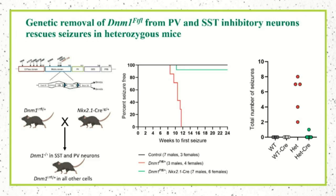We also asked whether removing the variant from specific neuron populations can improve the seizure phenotype. The mice have LOXP sites around the exon containing FITFUL, so we bred heterozygous FITFUL mice with NKX2.1-Cre mice — creating a mouse with the FITFUL variant in all cells except somatostatin and parvalbumin interneurons. Compared to positive controls, which all had at least one seizure by 11 weeks, only 1 of 13 rescue mice had one seizure. This is fairly encouraging on that front.